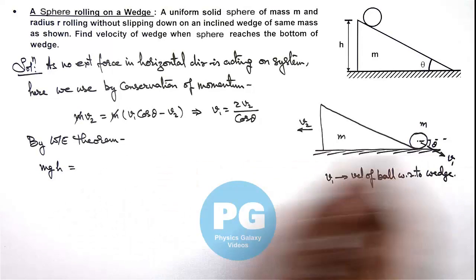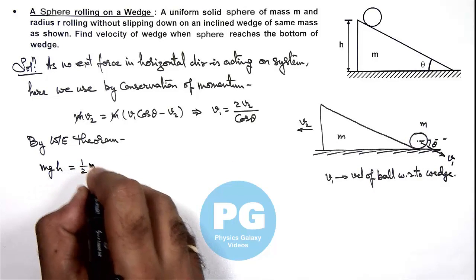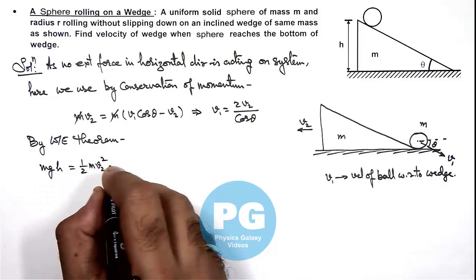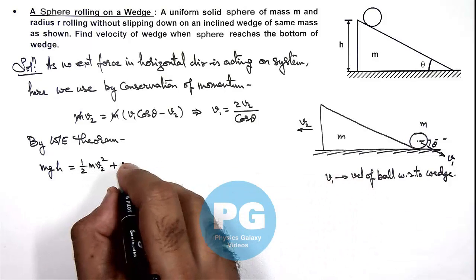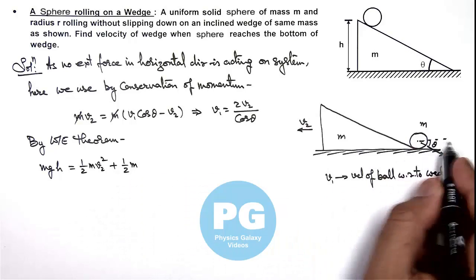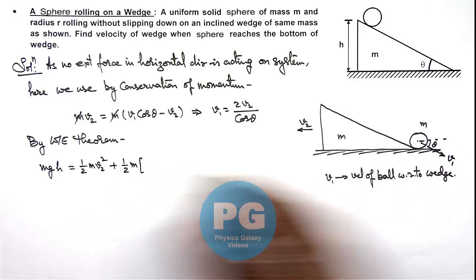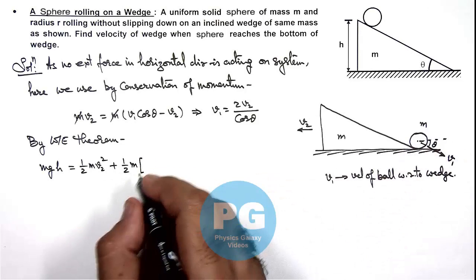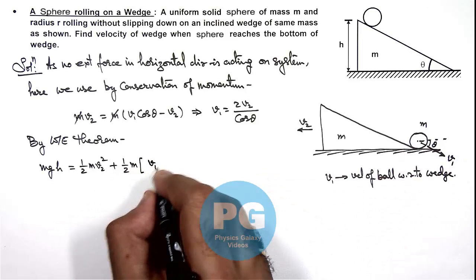of wedge plus ball. So for wedge it is (1/2)m v2², plus for ball we can write it is (1/2)m. It has 2 velocity components so we can write one as the horizontal velocity component which is (v1 cos θ minus v2).